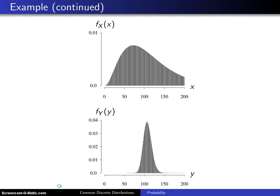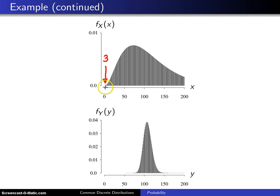On the next page is the picture of the probability mass function of X at the top and the probability mass function of Y on the bottom. Notice the capital X and capital Y subscripts — that's how you tell the two apart. This PMF of X does not start at zero, but rather at three. The way you get X equal to three is to roll double sixes three times in a row — very unlikely. The distribution of Y starts at 54; the way you get Y equal to 54 is to flip a fair coin and get 54 heads in a row, which is also very, very unlikely.